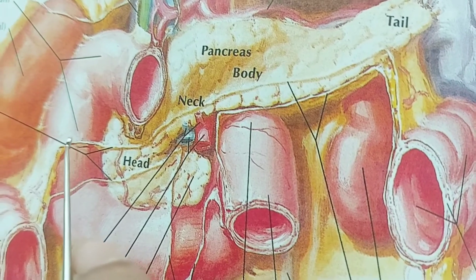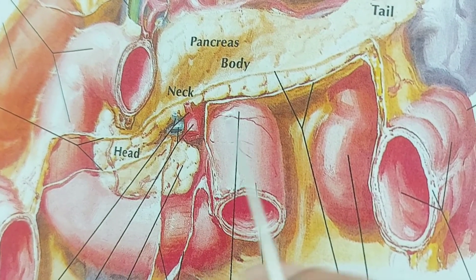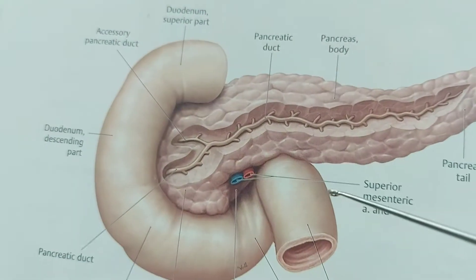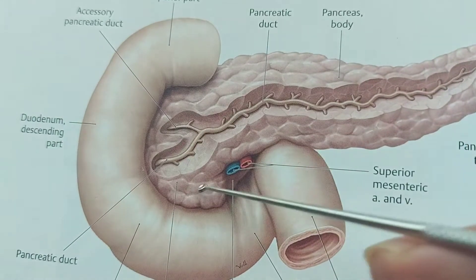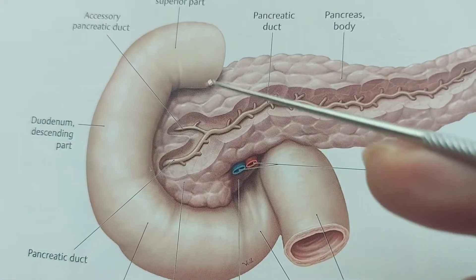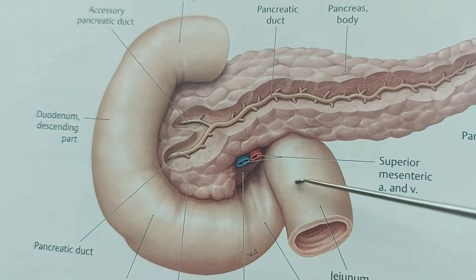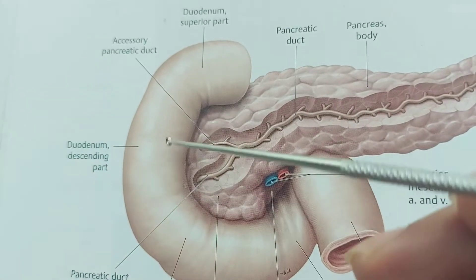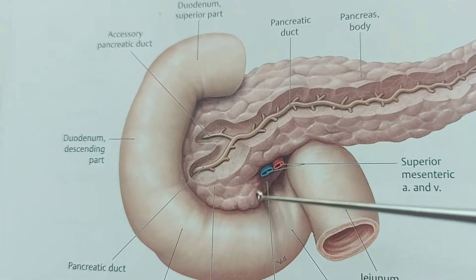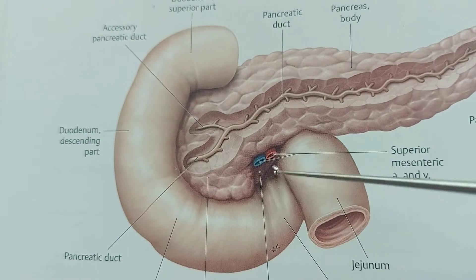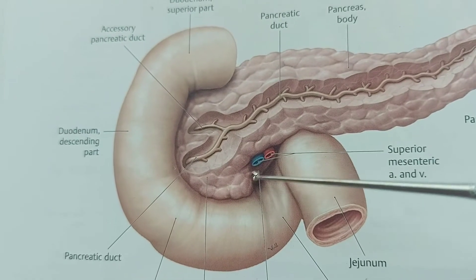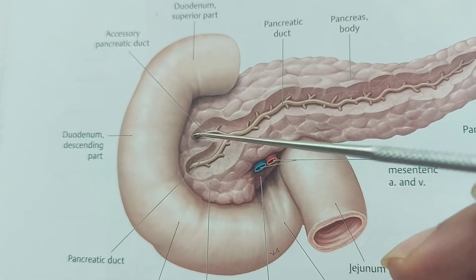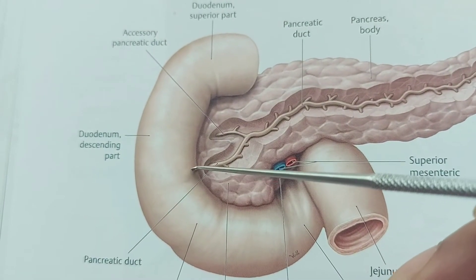This main pancreatic duct opens into the duodenum. The head of the pancreas is covered on three sides by three parts of the duodenum: the first part is superior to the head, the second part curves around the right border, and the third part is related to the inferior border. Here we also see the accessory pancreatic duct. The main pancreatic duct opens into the second part of the duodenum.